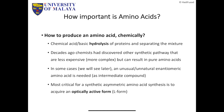The easiest way to produce amino acids chemically is hydrolysis of natural protein — you buy meat, put it in hydrochloric acid or use an enzyme to digest the protein, and then separate it into individual components. However, decades ago chemists discovered other synthetic pathways that are less expensive. They are more complex, but less expensive and can yield a pure amino acid in large quantity.